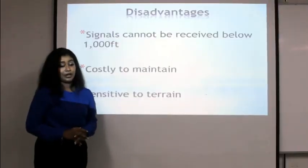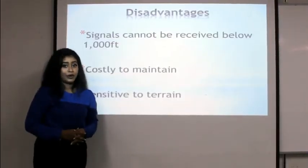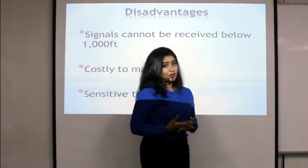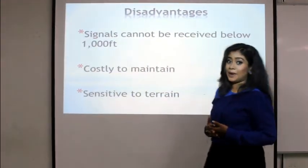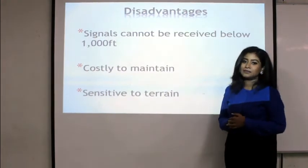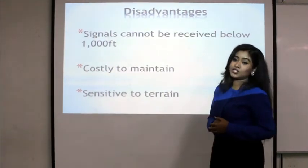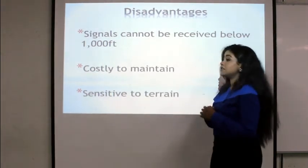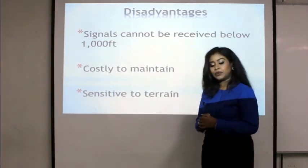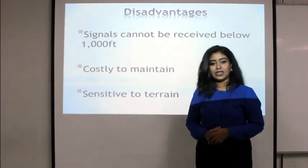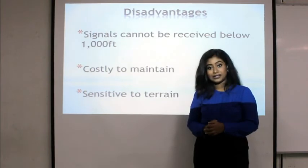As I mentioned before about the advantages of VOR, it is very simple and very accurate. It produces very accurate location for the pilots. But it has some disadvantages. The first disadvantage is the signals cannot be received below 1,000 feet. For example, if your aircraft is flying below 1,000 feet, it cannot receive VOR signals.